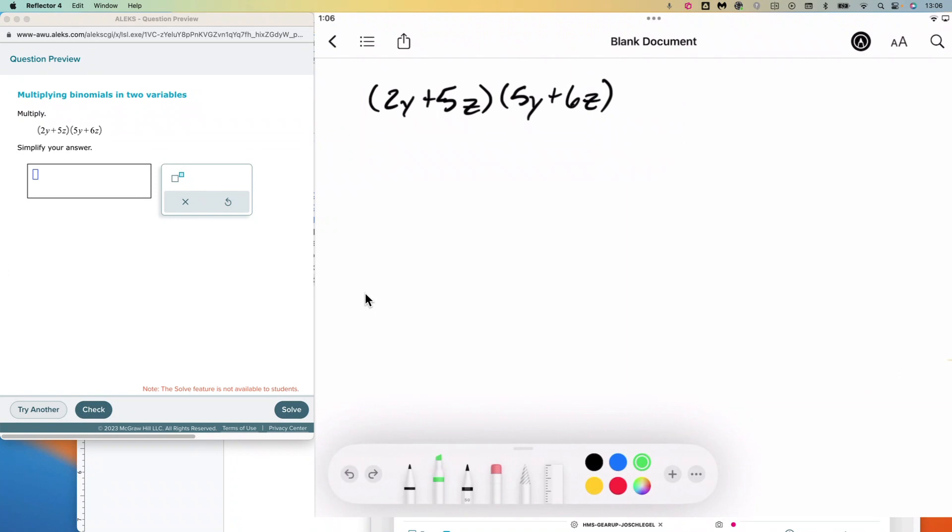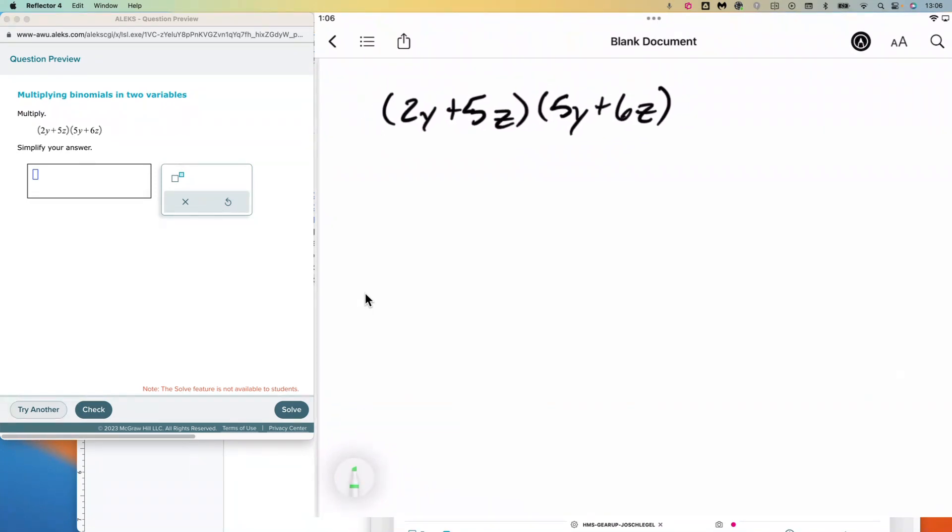They will not work if you have a one-by-three like we did in the last lesson. But what I'm about to show you will always work—this thing I call an area model, where we draw a box to help us organize our thinking and keep stuff straight.